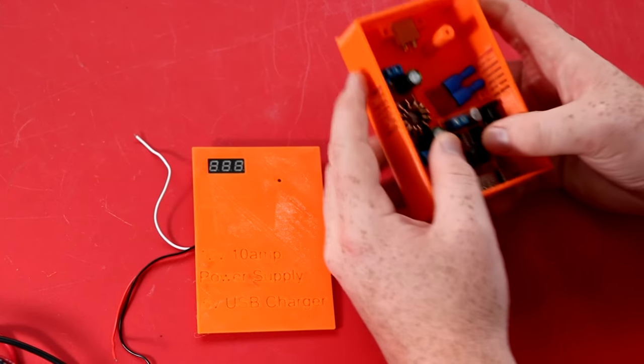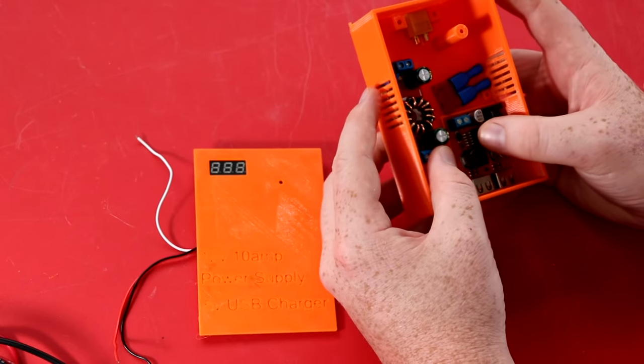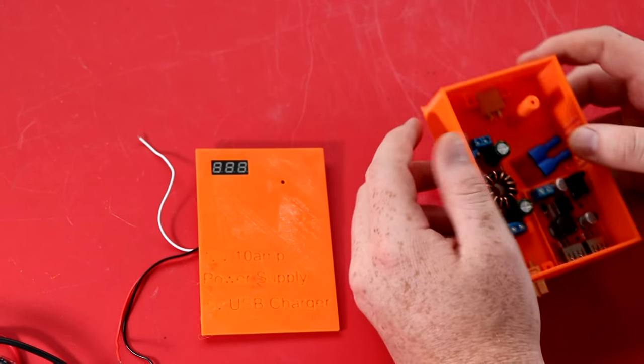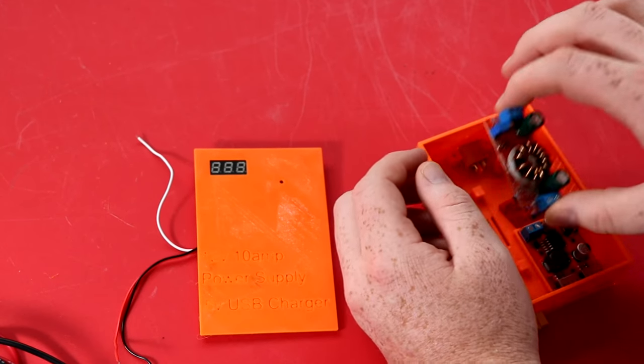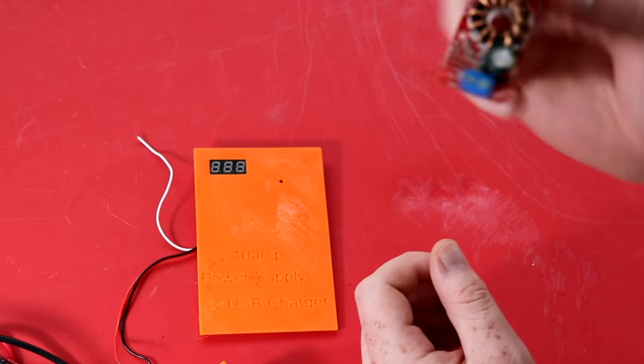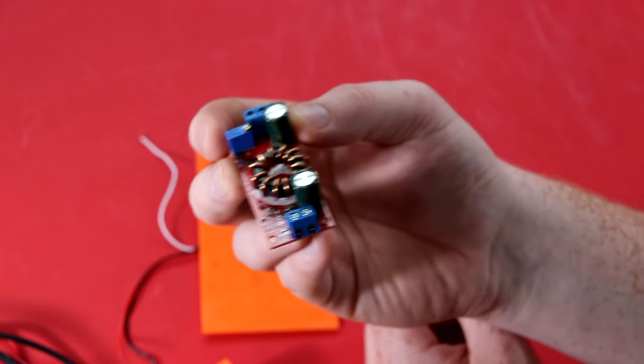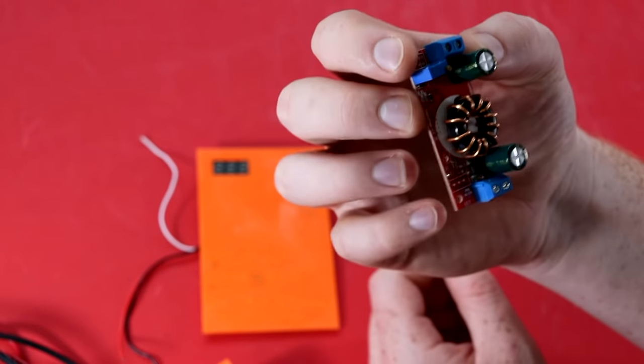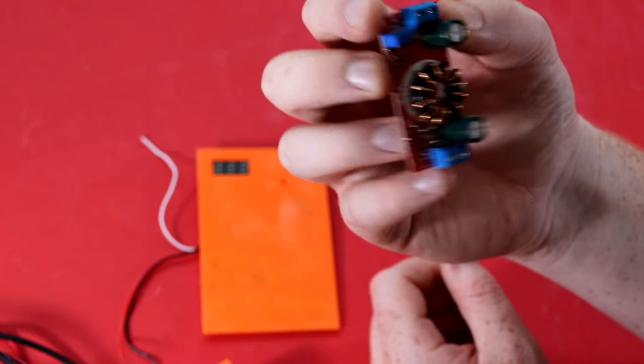And so what I'm going to go ahead and do is get started on this wiring. And I'm going to actually set the voltage to 12.5 on this module right here. And let's go ahead and get started.